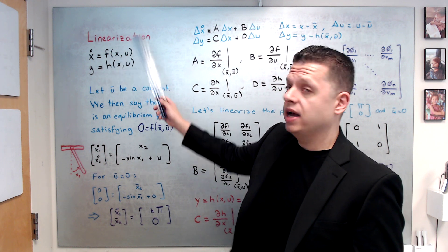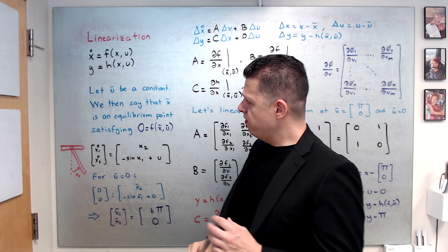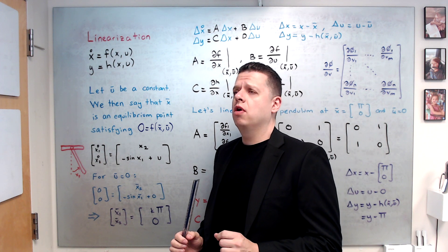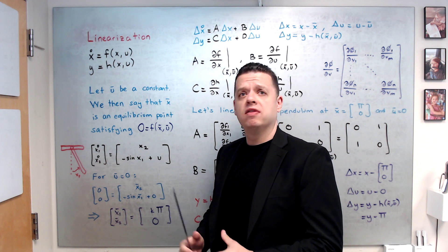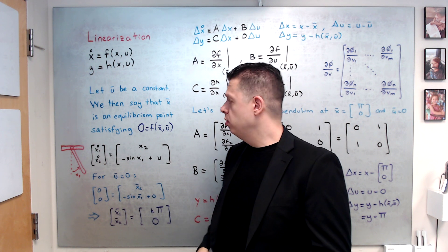u is the input, x is the state. Okay, so first of all we need to determine an equilibrium point that we want to control the system on that equilibrium point.